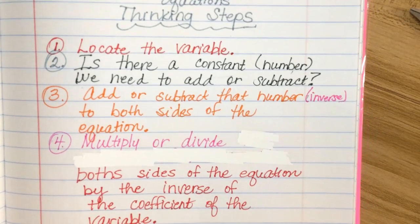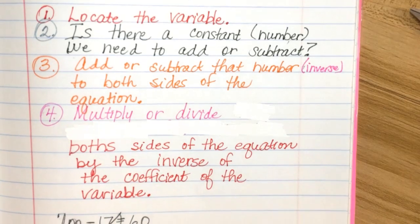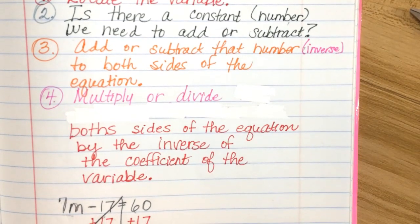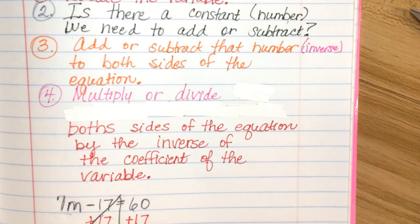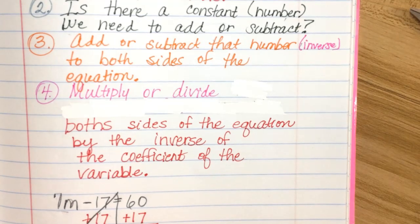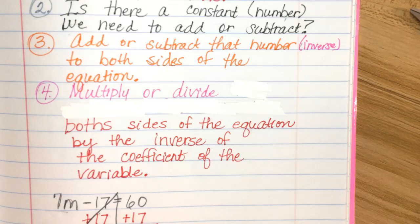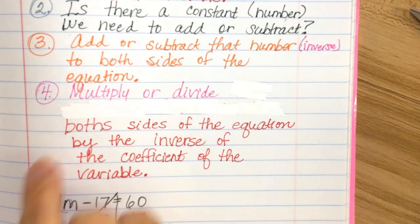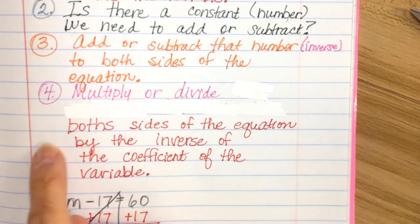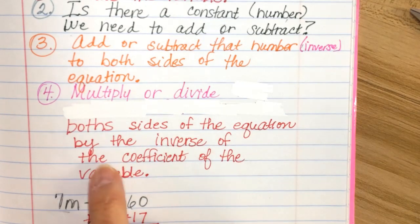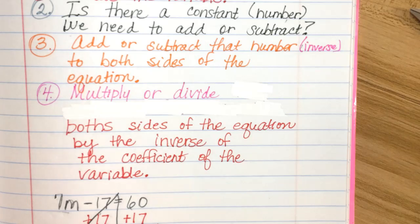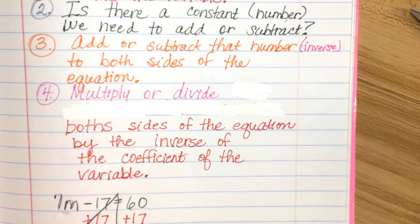I'm going to skip this on up. Is that okay? And this part I just messed up on. So this part, multiply or divide both sides of the equation by the inverse of the coefficient of the variable. So remember last Friday we went over all that, or you went over all that vocabulary?